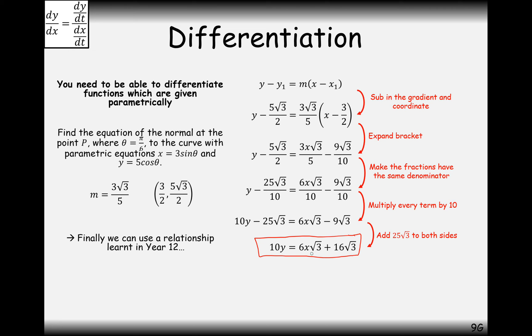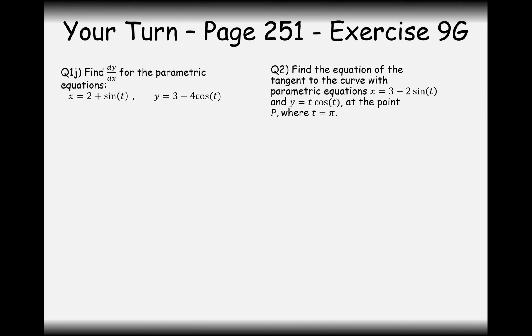So 10y equals 6x root 3 plus 16 root 3. So there we are. We would have got exactly the same thing if you would have plugged it into y equals mx plus c. Plug in your x value. We know the m value. We know the y value. So in this case, we just need to work out c. Oh, we can simplify it as well. That's handy.